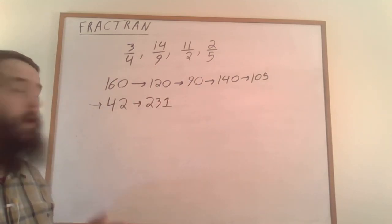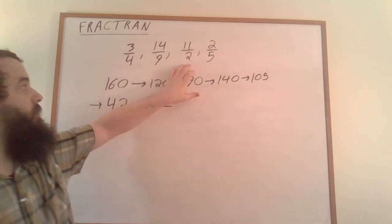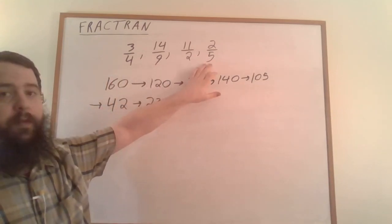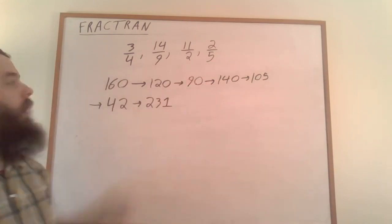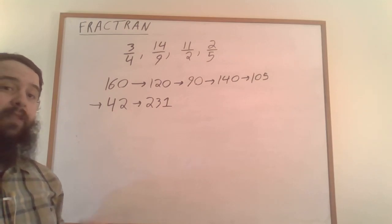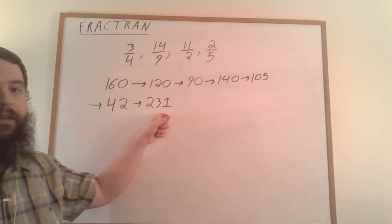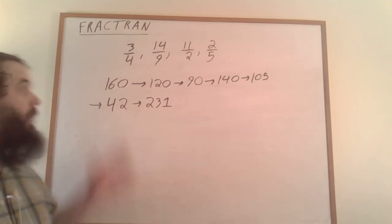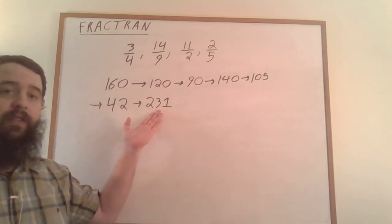Now 231 is not divisible by 4, 9, 2, or 5. If we multiply by any of these fractions, we won't get a natural number. When that happens, the program halts and outputs the current state. So when we input 160, it outputs 231.